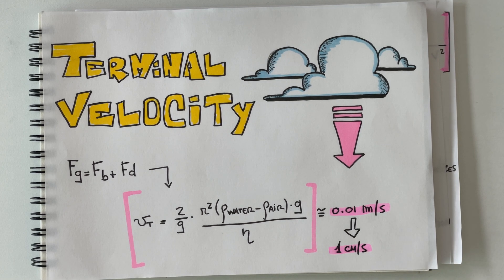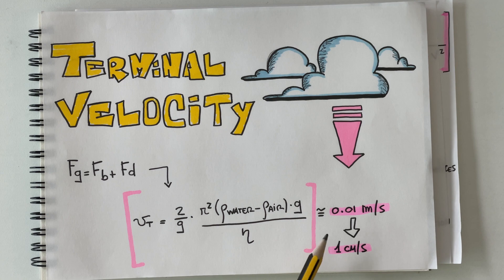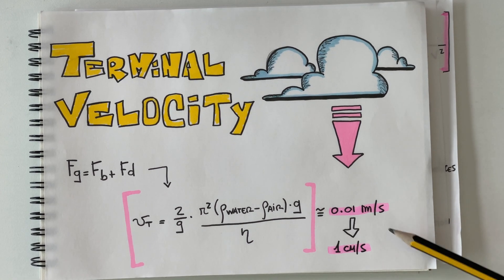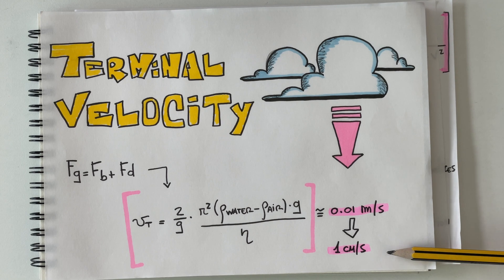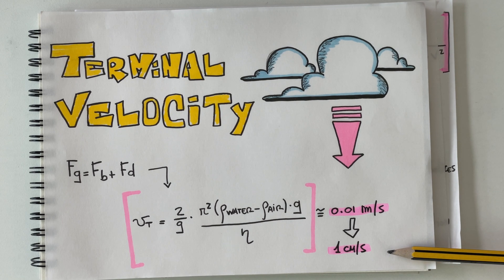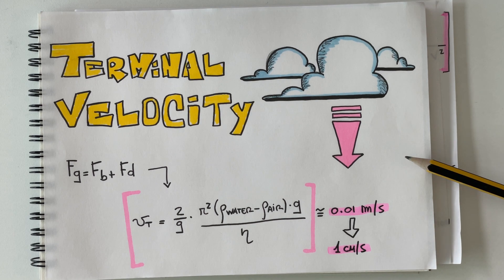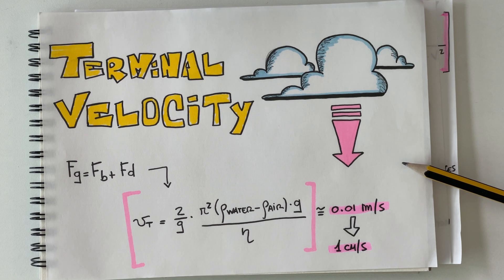So we have a terminal velocity which is different than zero. Actually we get 0.01 meters per second, or in other terms one centimeter each second. So actually the cloud is falling, but at this speed, even though the cloud is technically falling, its motion is so slow that our naked eyes cannot see it moving.